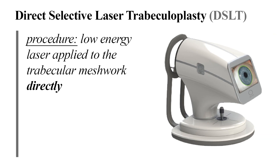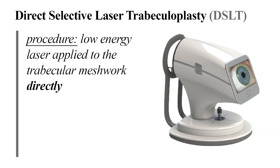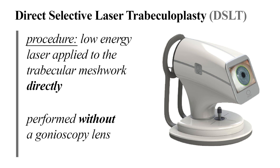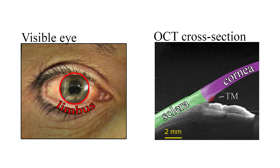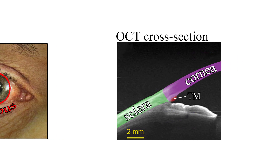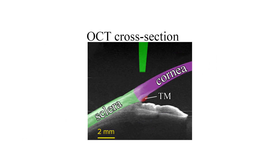Enter direct selective laser trabeculoplasty, or DSLT. This procedure is very similar to selective laser trabeculoplasty, except no gonioscopy lens is used and the laser is applied directly to the limbus of the eye. The limbus is the circular border of the sclera and cornea, which is situated right above the trabecular meshwork. The idea is that the laser travels through the limbus to reach the trabecular meshwork.